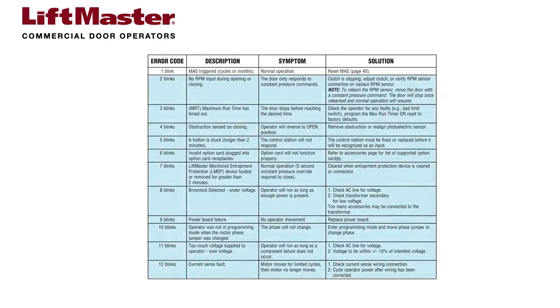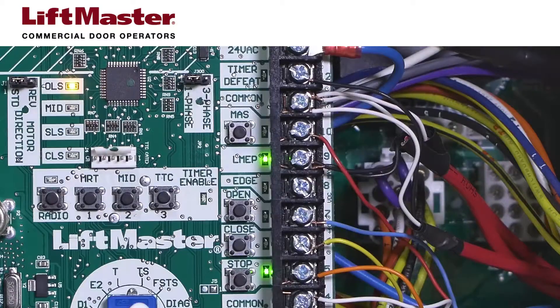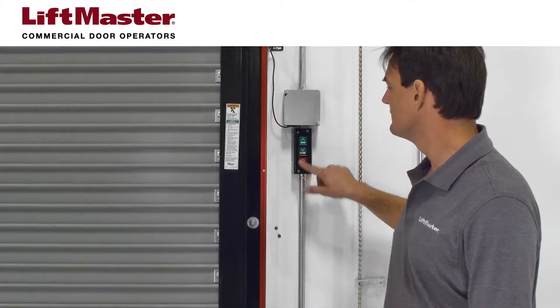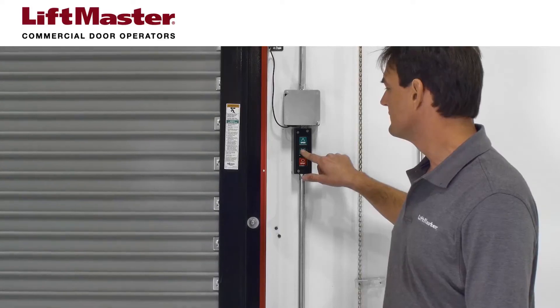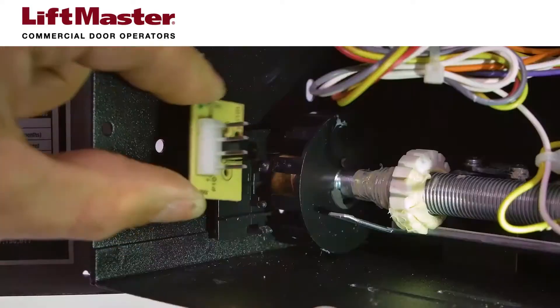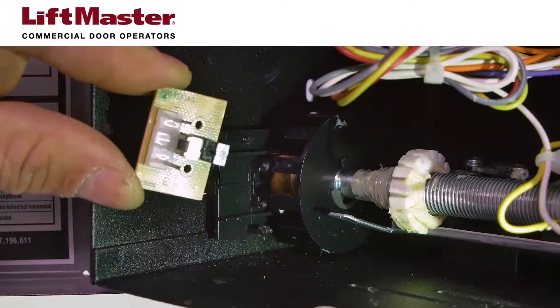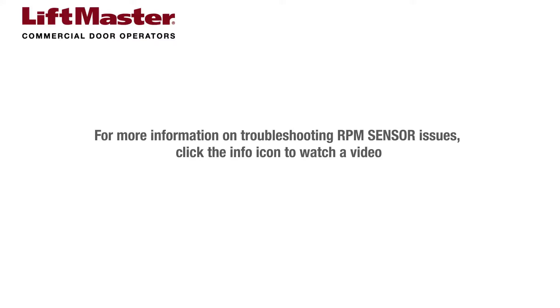The other error codes are more diagnostic in nature. When the MAS LED blinks two or more times followed by a pause, an operator error has occurred. If you encounter two flashes, it means there was no RPM input detected while the door was opening or closing. In this situation, constant pressure is needed to get the door to move. Possible solutions include adjusting a slipping clutch, checking the RPM sensor connection, or replacing it if needed. For more information on troubleshooting RPM sensor issues, click the info icon to watch a video.